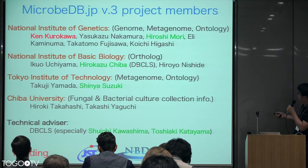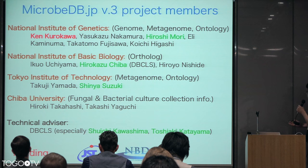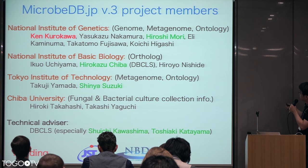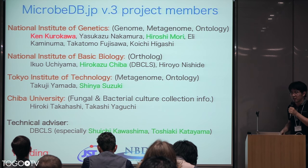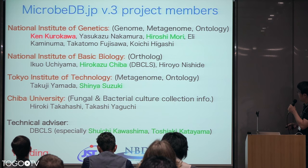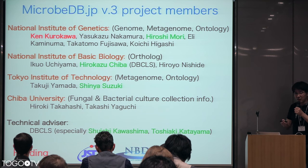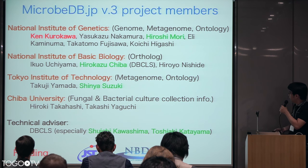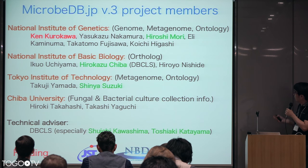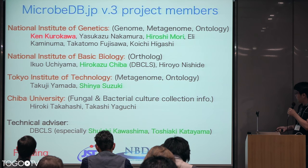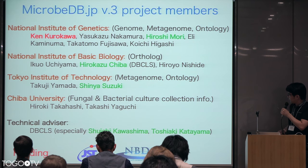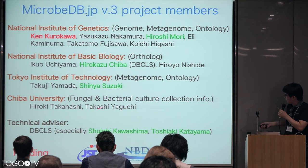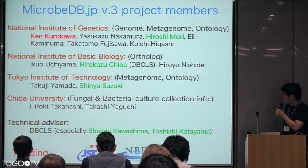There are four institutes involved: the Institute of Genetics, the National Institute of Basic Biology, Tokyo Institute of Technology, and Chiba University. In this hackathon, the green font marks those who are first participating and developing some kind of data. For example, Chiba-san from DBCLS is an expert in OWL/OBO ontologies, and Suzuki-san from Tokyo Institute of Technology is an expert in microbial ecology ontology. We also have technical advisors, as our database is fully RDF-based, so many technical advancements are necessary. Kawashima-san and Katayama-san from DBCLS are technical advisors for our database.